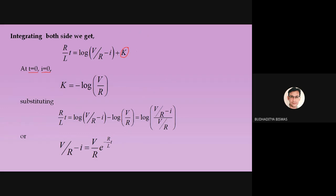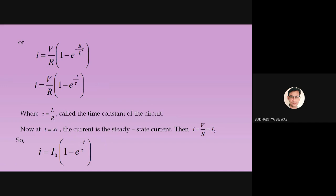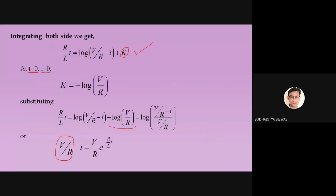Substituting the value of K in the expression: (R/L)·t = ln(V/R − I) − ln(V/R) = ln[(V/R − I)/(V/R)]. Rearranging: V/R − I = (V/R)·e^(−R/L·t). Therefore: I = (V/R)·[1 − e^(−R/L·t)].